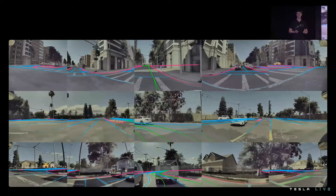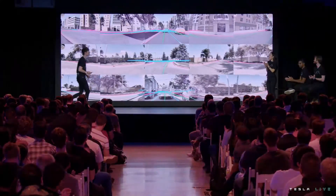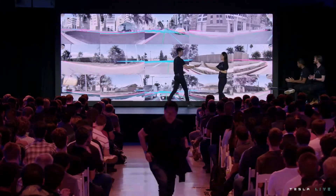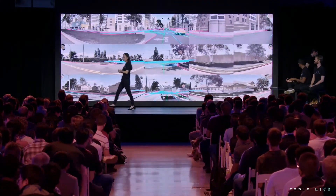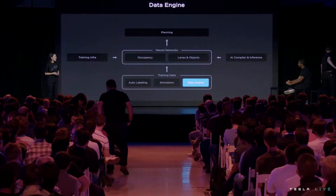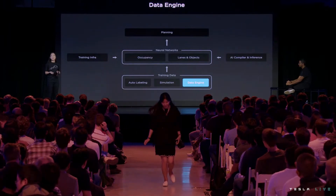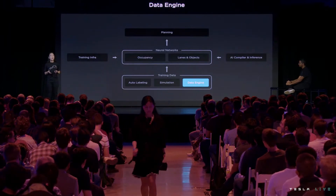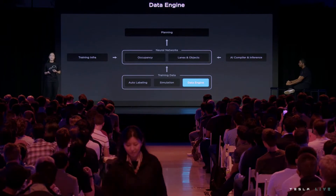And that concludes the sim section. I'll pass it to Kate to talk about how we can use all this data to improve autopilot. Thanks David. Hi everyone, my name is Kate Park and I'm here to talk about the data engine, which is the process by which we improve our neural networks via data.